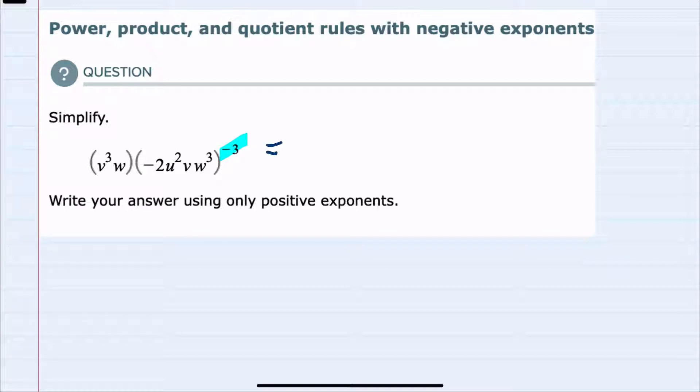So one simplification that I can make is since the first parentheses has a positive exponent I can leave that v cubed w in the numerator and move the second parentheses negative 2 u squared v w cubed. I can move that to the denominator and make that power on the outside a positive 3. So that's our first simplification and it's worth noting that we could do these simplifications in different orders but we would still end up at the same simplified expression.